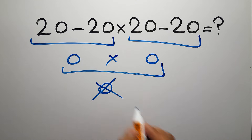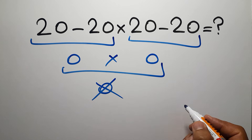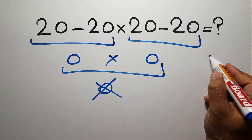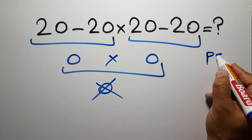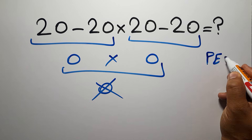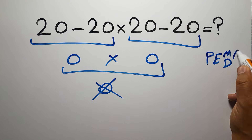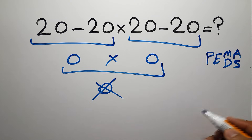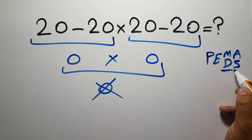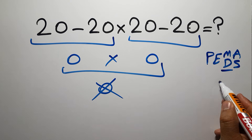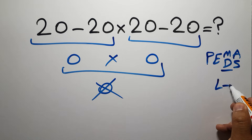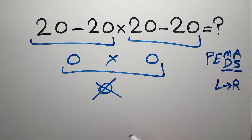But this answer is not correct, because according to the order of operations, first we have to do parentheses, then exponents, then multiplication or division, and finally addition or subtraction. Remember that multiplication and division have equal priority and we have to work from left to right, and the same applies to addition and subtraction.